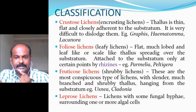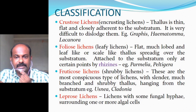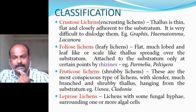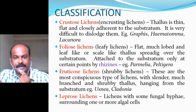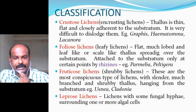In Foliose lichens, the thallus is flat, much lobed and leaf-like or scale-like, spreading over the substrate and attached only at certain points by means of structures called rhizines. Examples are Parmelia and Peltigera. Fruticose lichens are the most conspicuous types with slender, much-branched and shrubby thallus hanging from the substratum; examples are Usnea and Cladonia.